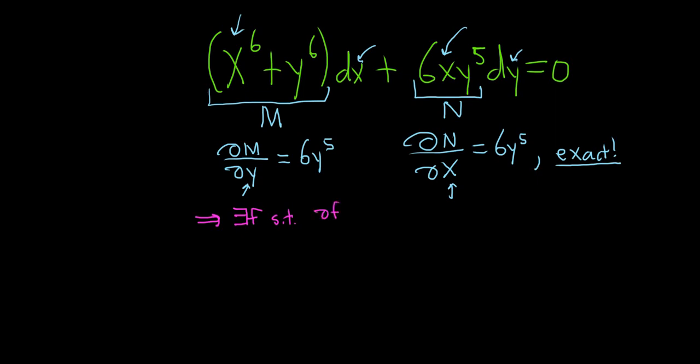Del F del X dx plus del F del Y dy equals zero. And F is the solution to this differential equation. So this piece here in front of the dx is del F del X. And the piece here in front of the dy is del F del Y. So to solve the differential equation, we just have to find F. The easiest way to do that would be to just integrate both pieces.